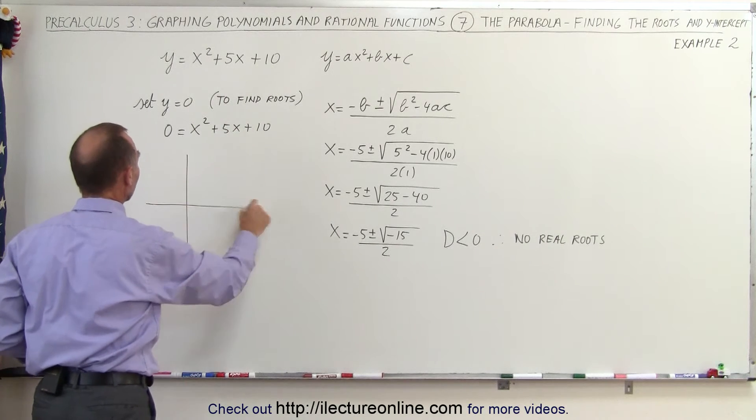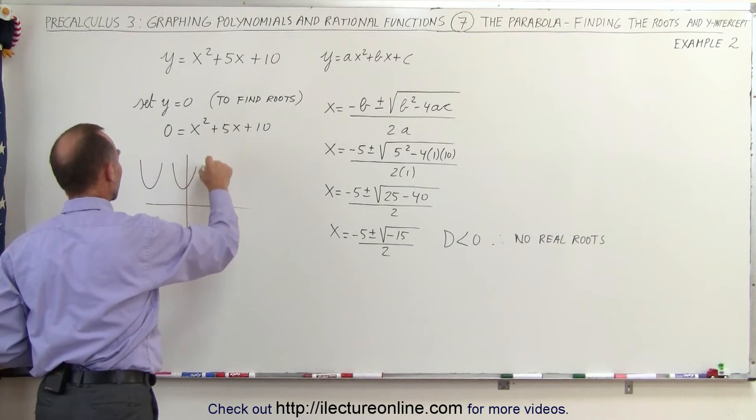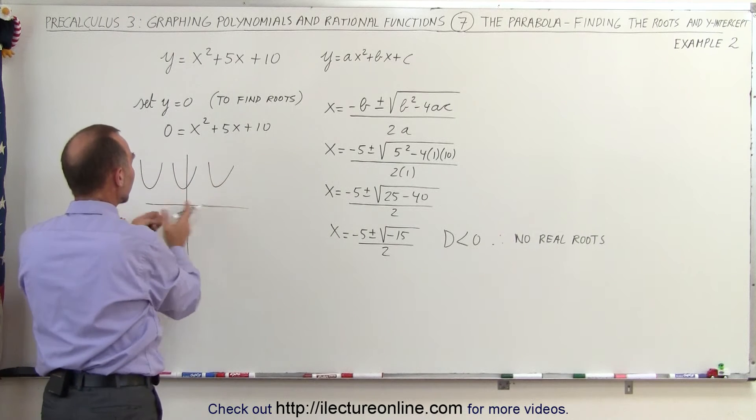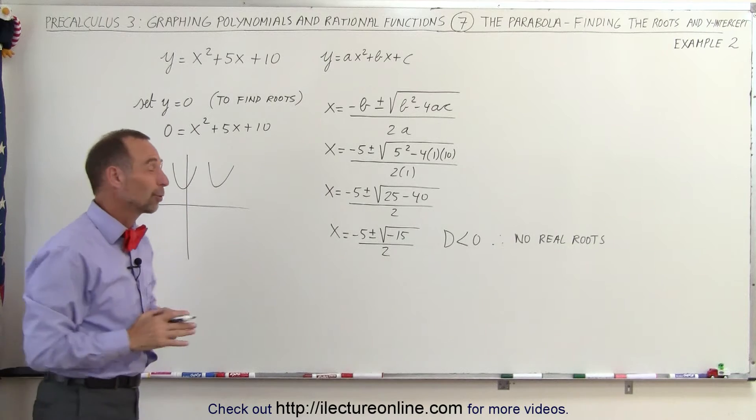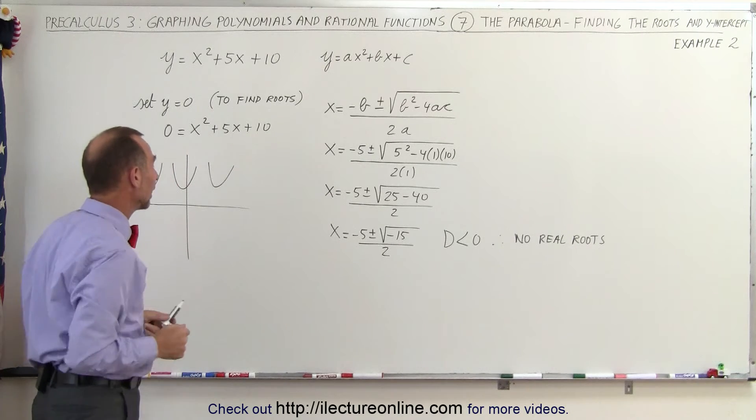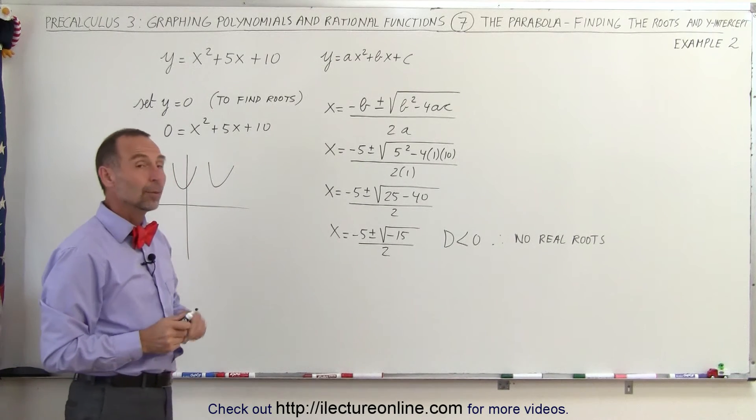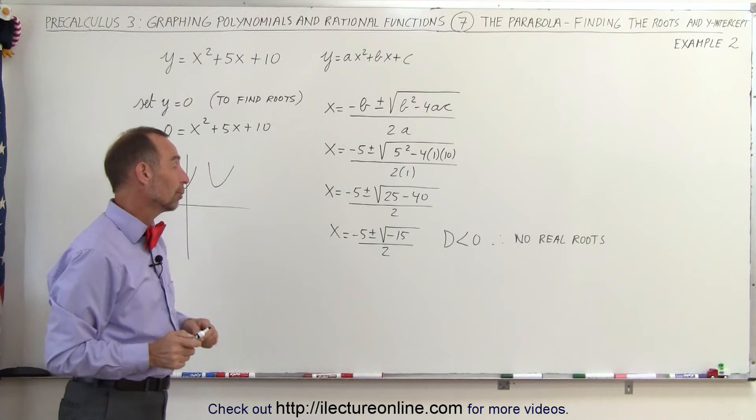So we'll have something that looks like this, either like this or like this or like this. Somewhere, it doesn't cross the x-axis. There are no real roots and we know the parabola opens upward. The question, of course, is where exactly will that be? We do know that we have imaginary roots.